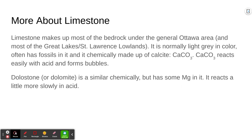Limestone makes up most of the bedrock under the general Ottawa area and most of the Great Lakes–St. Lawrence Lowlands. Limestone is normally pretty light gray in color and it often has fossils in it. Chemically it's made up of calcite, which is CaCO3 — calcium carbonate. One of the things to note is that calcium reacts easily with acid and forms bubbles. Dolomite, found in Southern Ontario, is similar chemically but has more magnesium in it, so it reacts a little more slowly in acid.